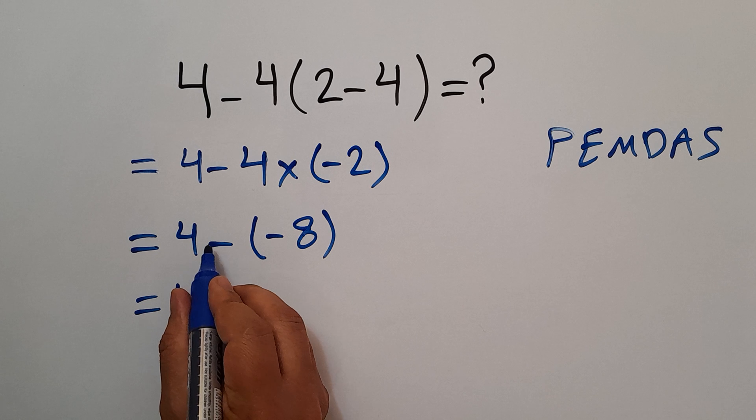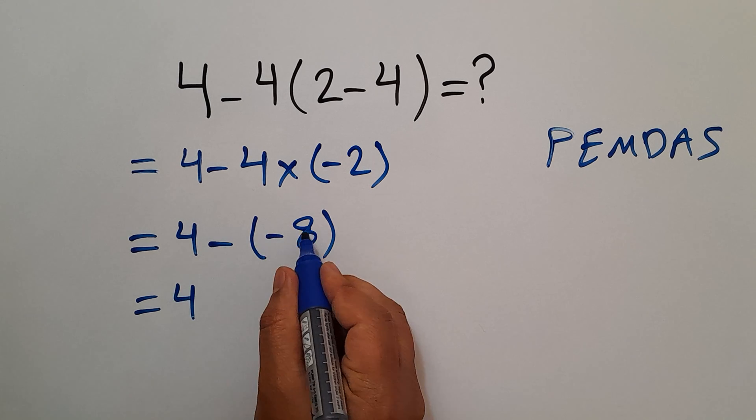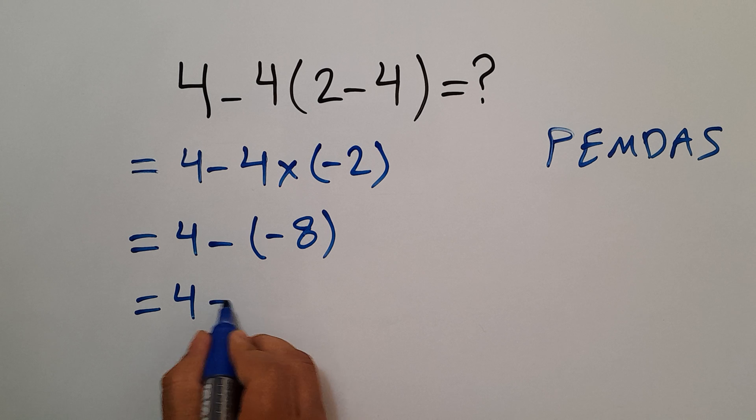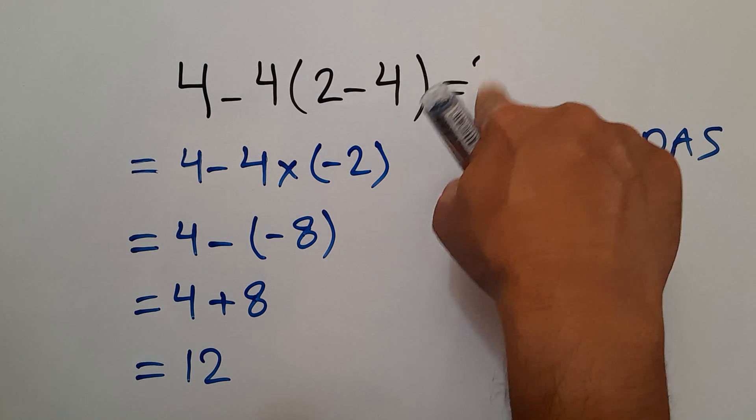4 minus negative 8 gives us plus 8, and 4 plus 8 equals 12. So our final answer to this problem is 12.